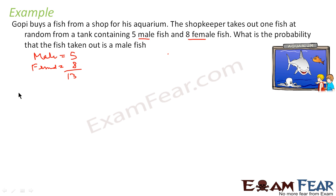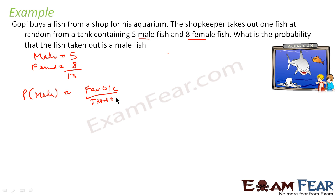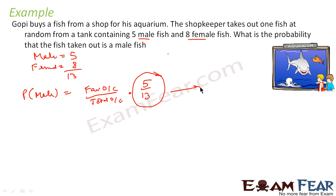Total are 13 fish. We have to find the probability of male fish, because when you take out the fish it may be male or female. So we define that as male. This is favorable outcome by total outcome. What is the favorable outcome? For male it is 5, so it is 5. Total outcome is total number of fish, which is 13. So the probability of the fish being male is 5 by 13.